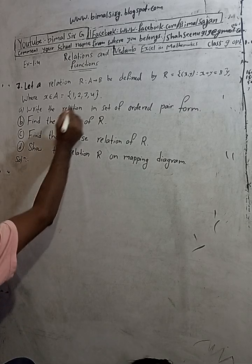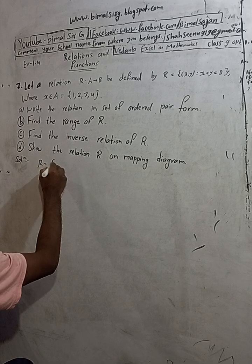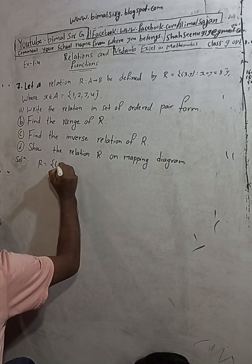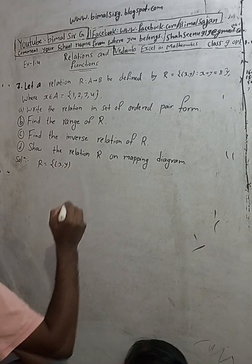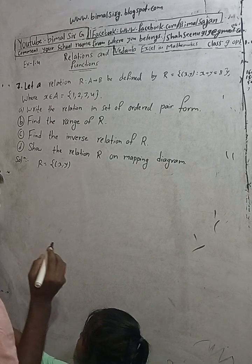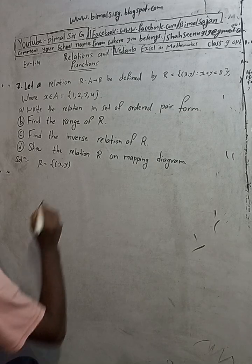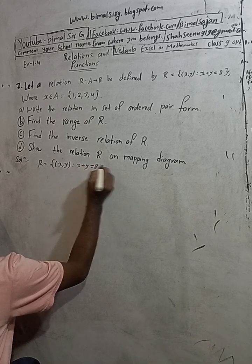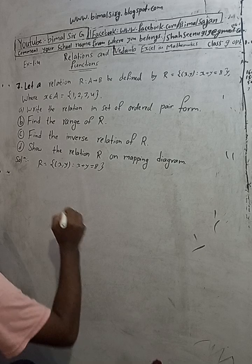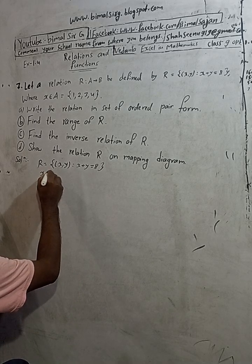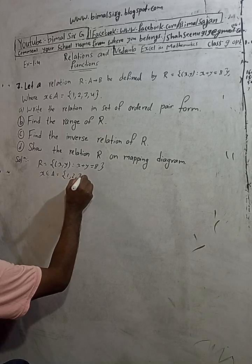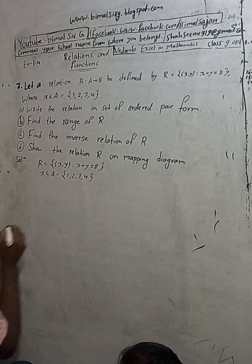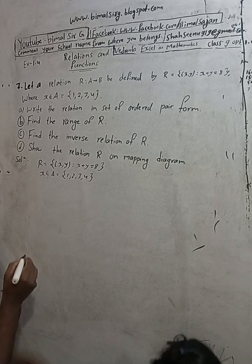Given: R is equal to — curly bracket, small bracket — (x, y) such that x plus y is equal to 8, and x belongs to A equals {1, 2, 3, 4}. Now, x can be 1, 2, 3, or 4.